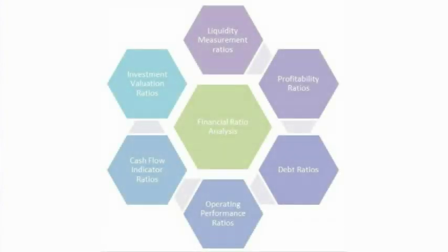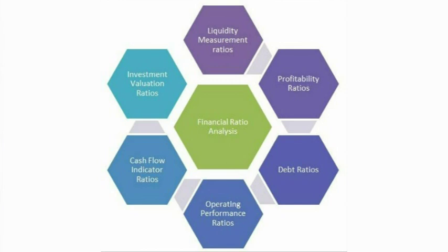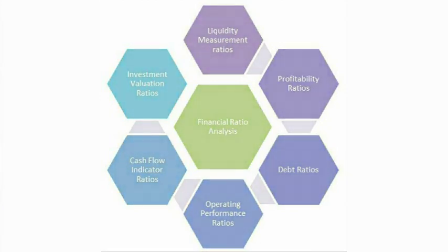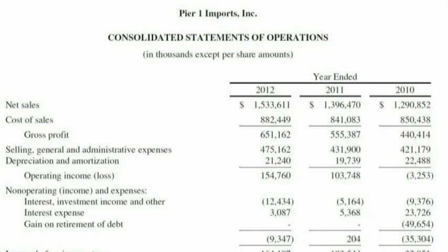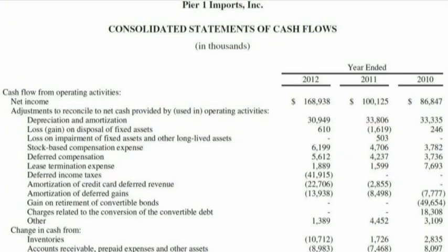The categories of these ratios are liquidity measurement ratios, profitability ratios, debt ratios, operating performance ratios, cash flow indicator ratios, and investment valuation ratios. Just about every ratio used will get its components, or numbers, from the company's financial statements, such as the income statement, the balance sheet, and the cash flow statement.